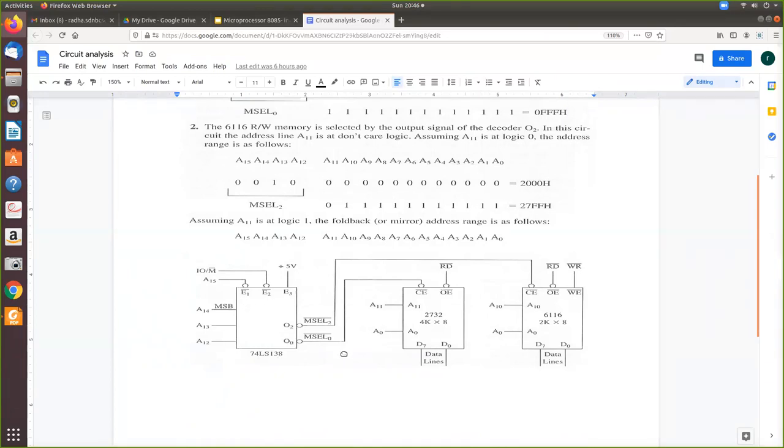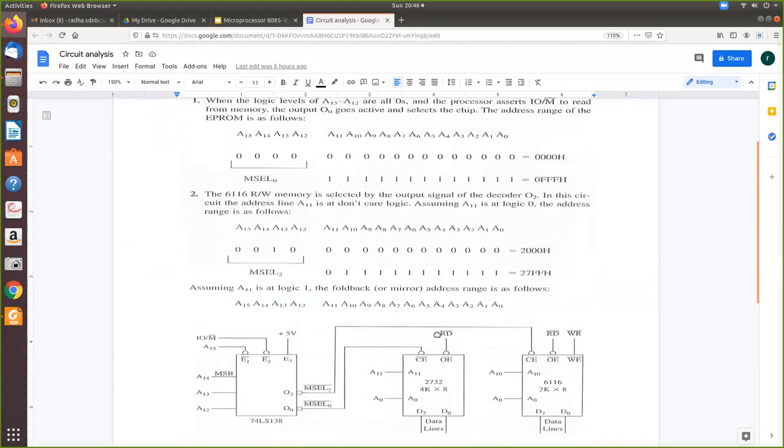For this EPROM, output O0 is taken. For this RAM, output O2 is connected. A15 is used to enable this 3-to-8 decoder. When A15 is 0, this decoder will be selected, and output O2 is connected with this RAM. Since it is connected, first we will see EPROM. For EPROM to be selected, A12, A13, A14 must be 000. And A15 must be 0 to enable the decoder.